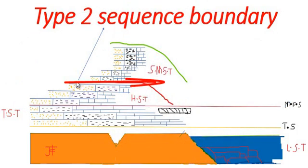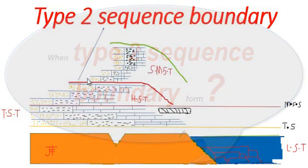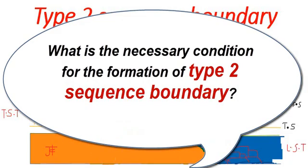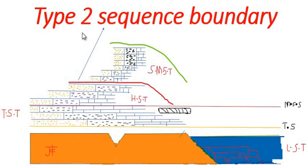A Type 2 sequence boundary is a marine stratigraphic surface formed during progradation, during seaward migration of terrestrial facies. The necessary condition for the formation of a Type 2 sequence boundary is that sea level must not fall below the shelf break, or offlap break.